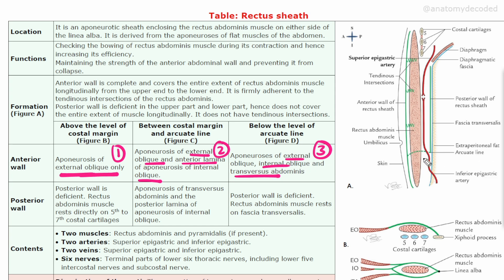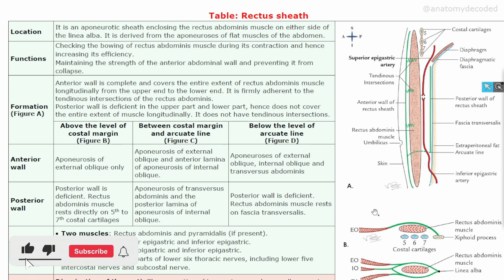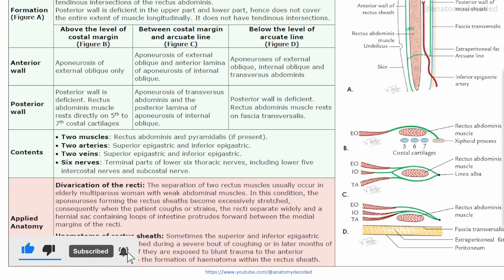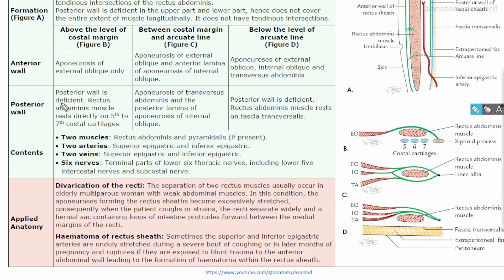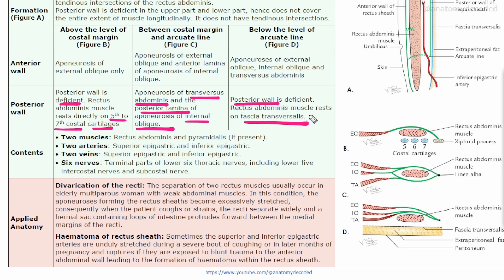Now let us see the posterior wall of the rectus sheath. It is deficient above the costal margin, and the muscle rests directly on the fifth to seventh costal cartilages. In the middle part, there is the aponeurosis of the transversus abdominis muscle as well as the posterior lamina of the internal oblique aponeurosis. In the lower part, the posterior wall of the rectus sheath is deficient, so the muscle rests directly on a fascia called fascia transversalis.